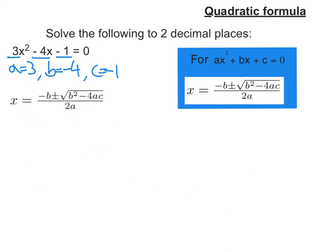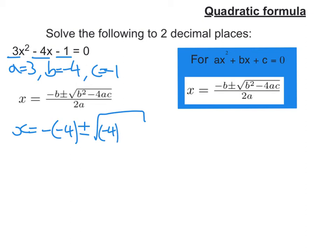Next, I would write out my formula. There it is. And then I'd put my values in. So x is going to be equal to minus minus 4, plus or minus the square root of b squared, so that's minus 4 squared, minus 4 times a, which is 3, times c, which is negative 1. So I'll put a bracket around those, so I'm careful. And that's all over 2 times 3, as a is 3.